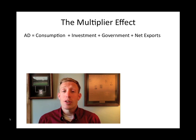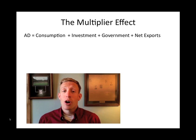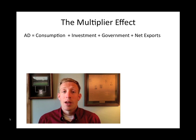When government increases spending, that's going to necessarily increase aggregate demand by changing the government spending part of aggregate demand. But it can also affect other parts of aggregate demand. One of the more direct things that it can affect is consumption spending. If government spends money, it has to spend it on something, and presumably it's going to spend money to buy things, which means incomes of households will go up. So not only will government spending increase, but consumption can increase as well.